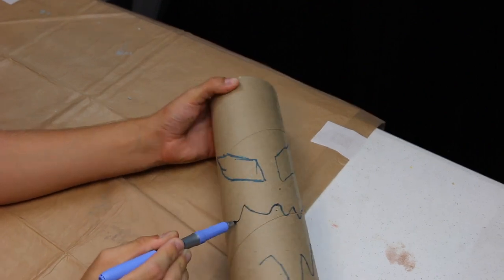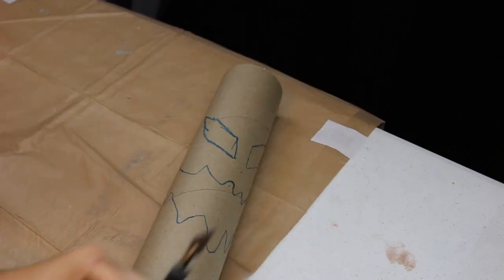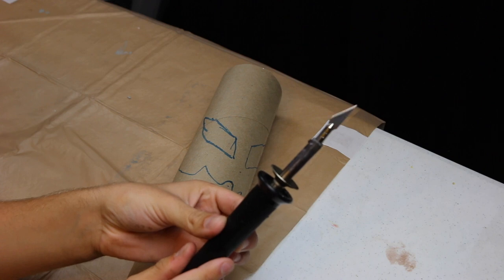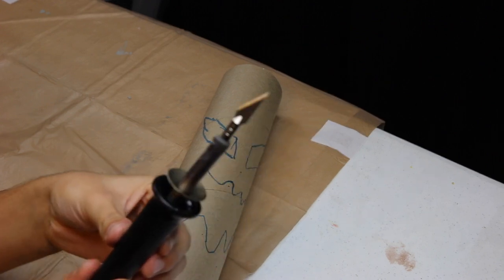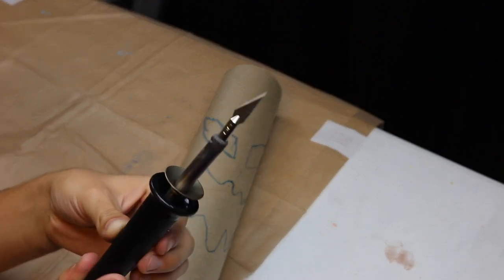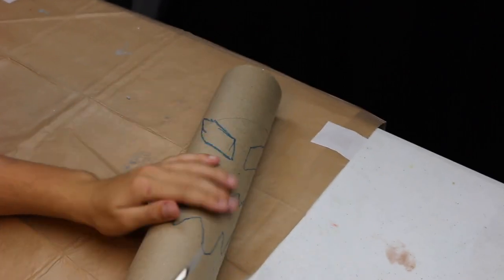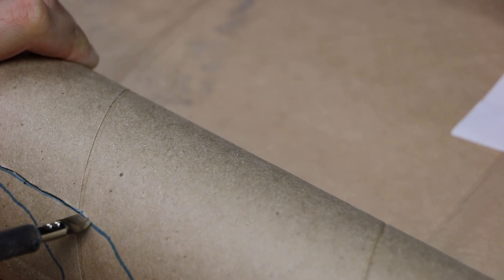Once you have your face drawn on, it is time to cut it. Now you can probably use scissors if you're using a thin tube, but since mine is so thick I'm going to have to use this hot blade. If you are using a hot knife like this, please be very careful again. You do not want to cut yourself.